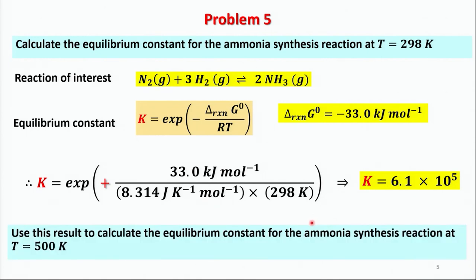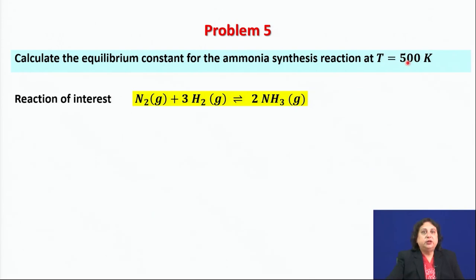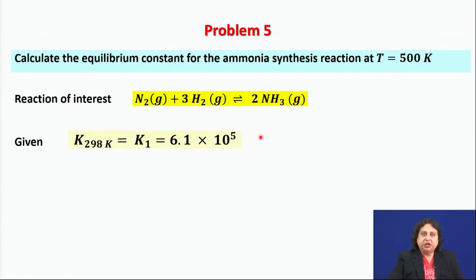The next question is: can we use this result to calculate the equilibrium constant for the ammonia synthesis reaction at 500 Kelvin? The reason is to assess whether higher temperature gives better commercial viability. We denote the equilibrium constant at 298 Kelvin as K₁, whose value we have already determined.